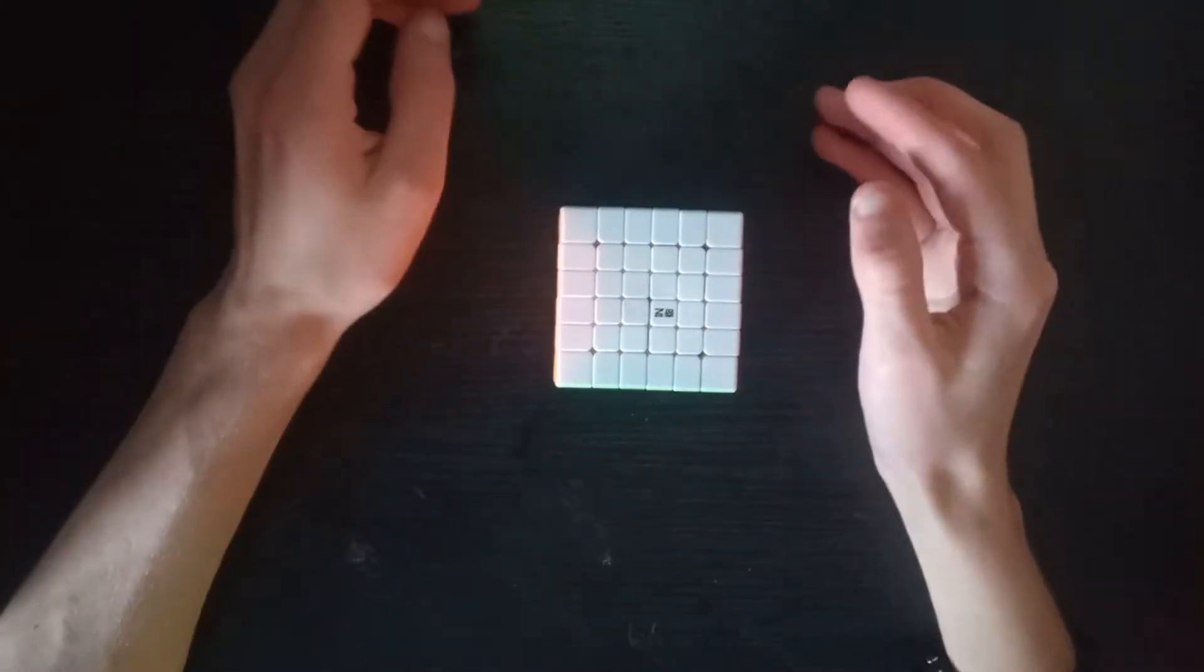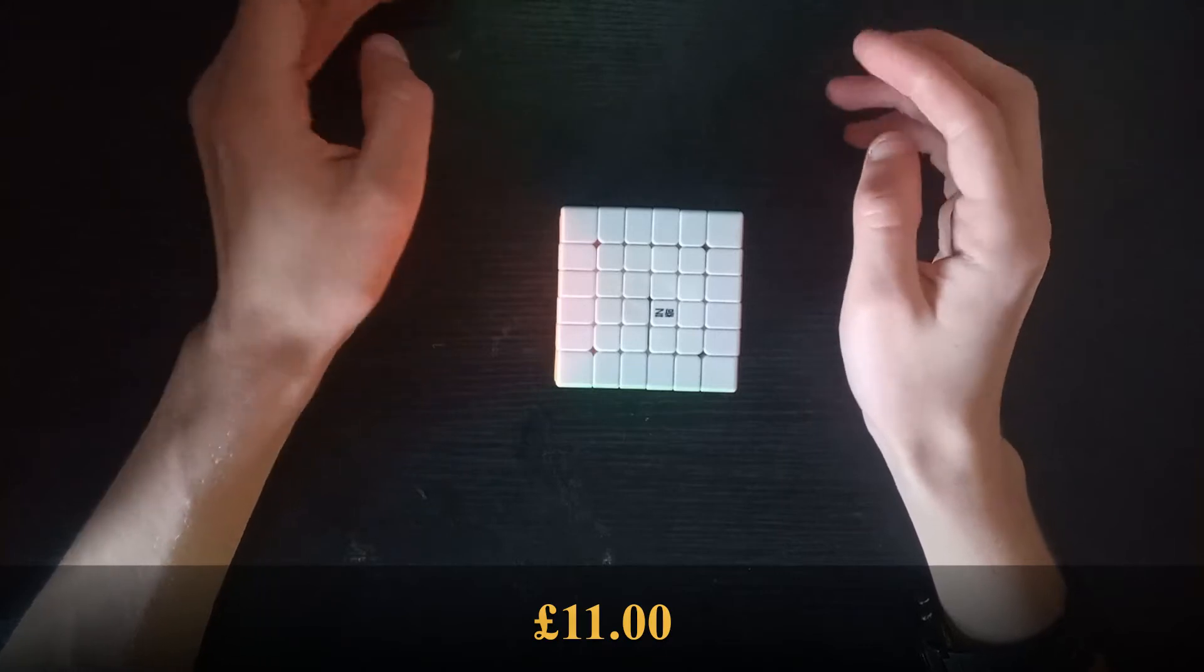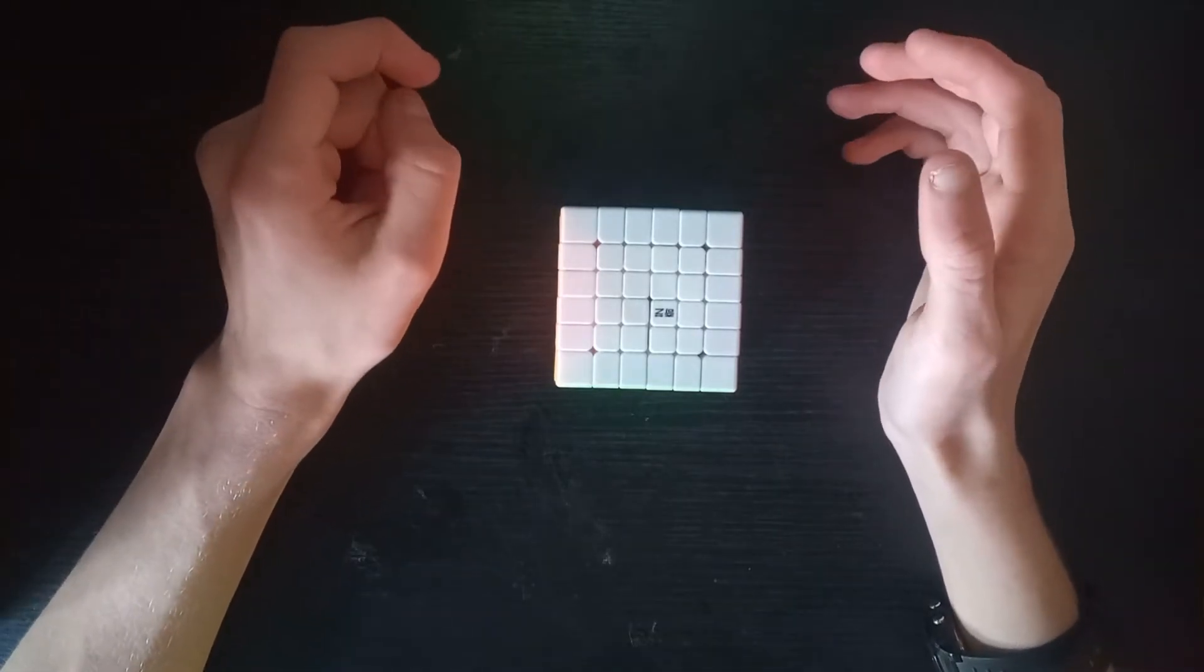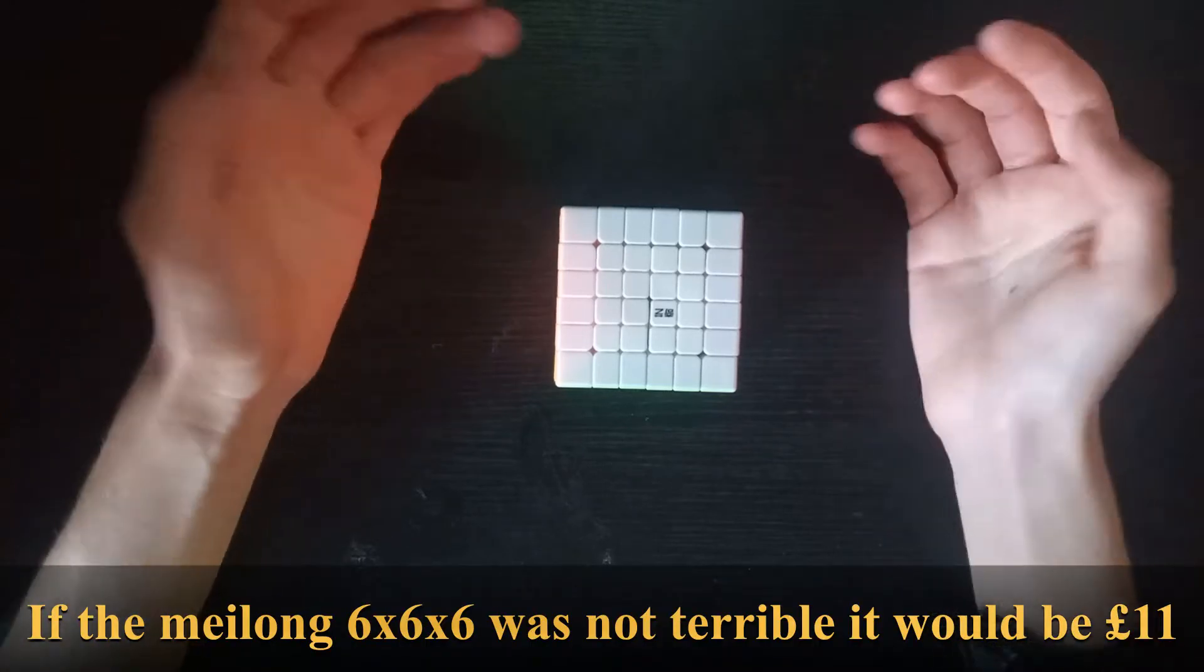The Chifan S2 comes in at just £11 on speedcubing.org, making it the lowest price of any 6x6 on speedcubing.org, and realistically the lowest price of any 6x6 you're going to find.